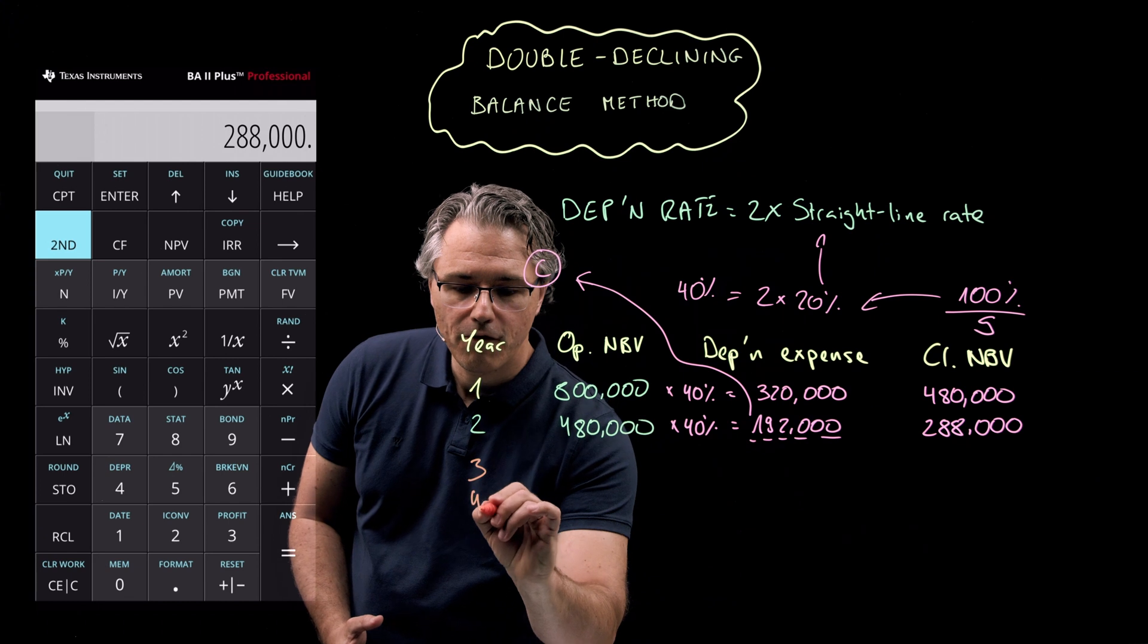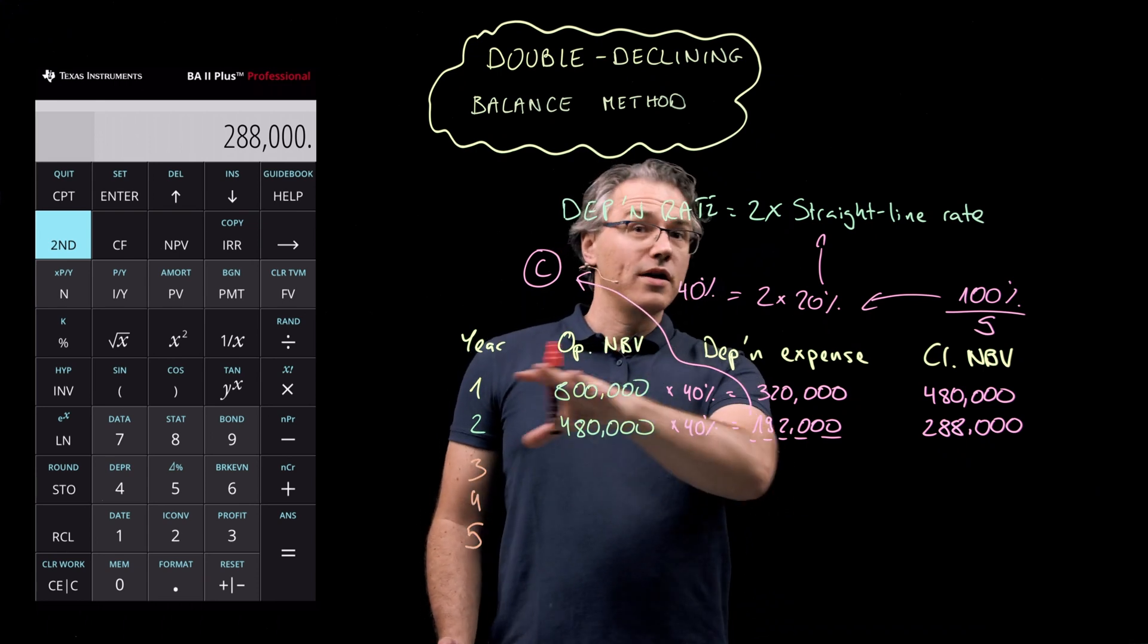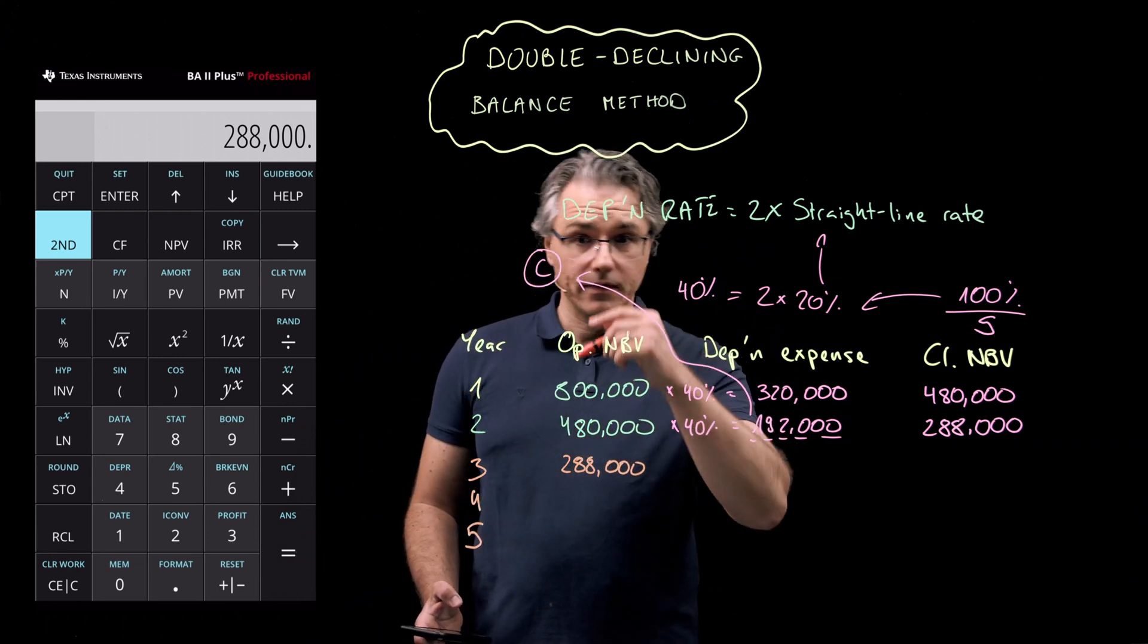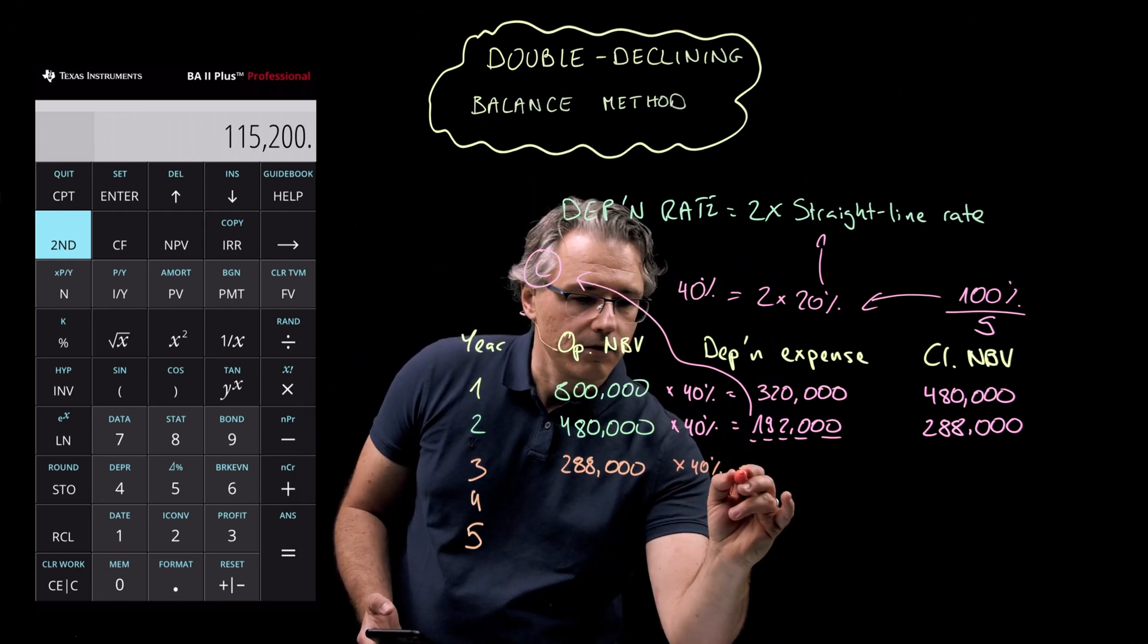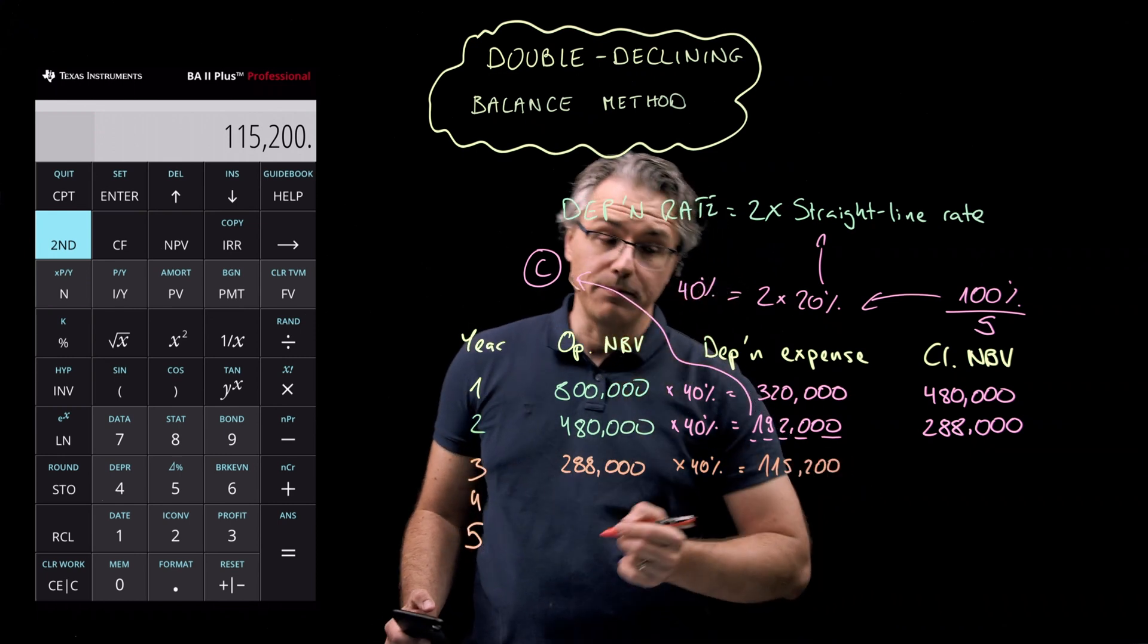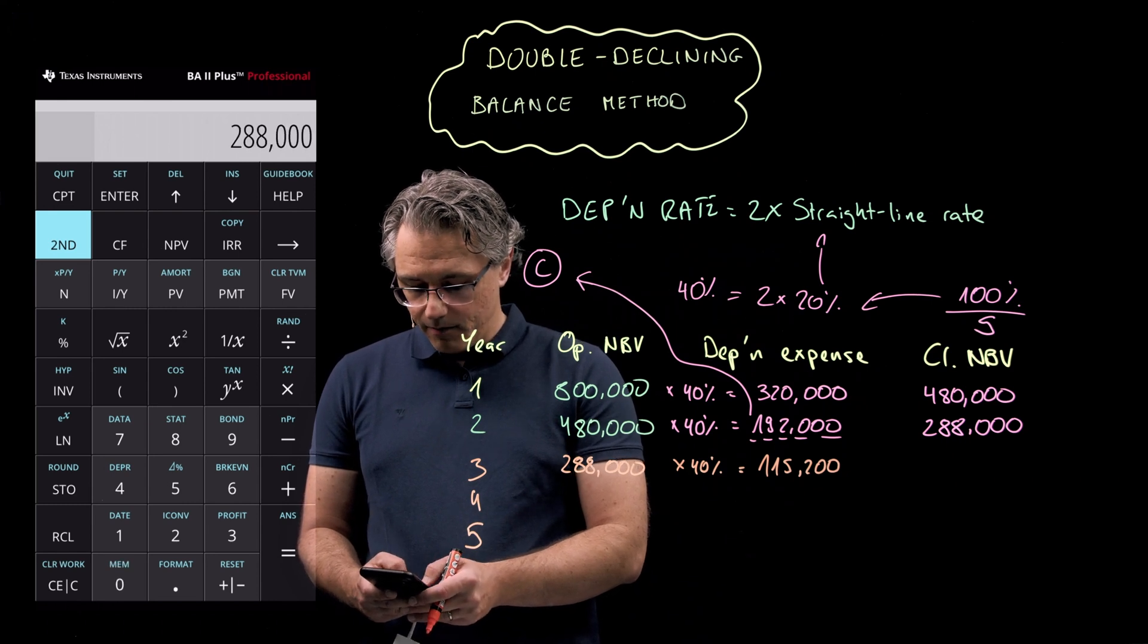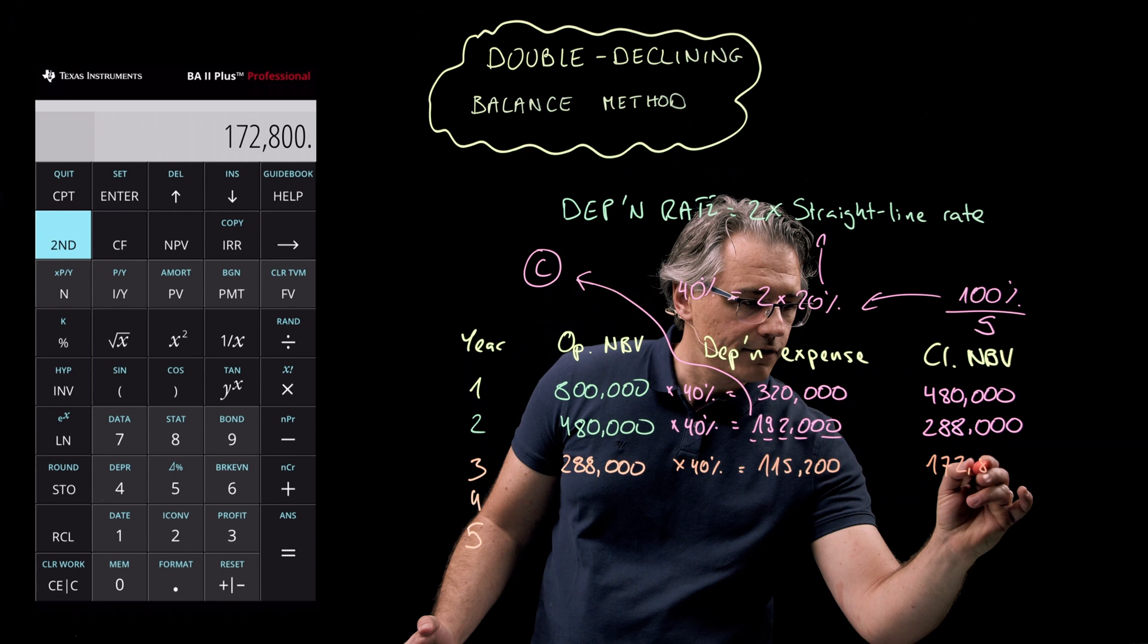We stopped over here as at the end of year two with a closing NBV. And I'm going to do the subsequent years. So years three, four, five, really quickly. This 288,000 goes here as the opening balance for year three. Let's multiply this by the constant 40% depreciation rate. So that's going to produce 115,200 depreciation expense for the year. 288 minus 115.2 is going to give a closing balance of 172,800.